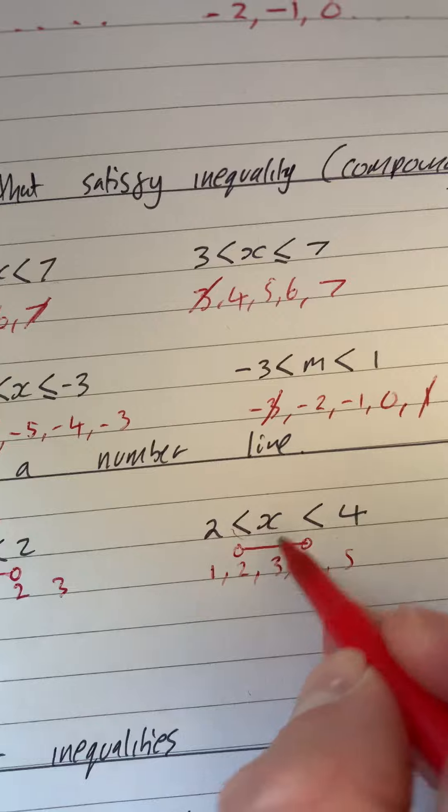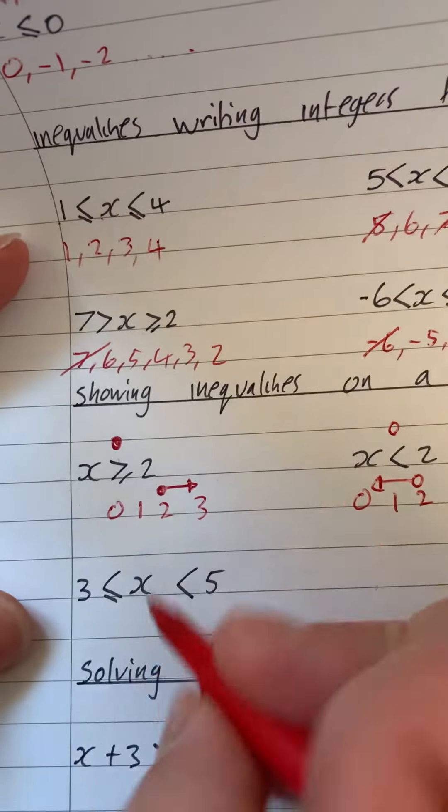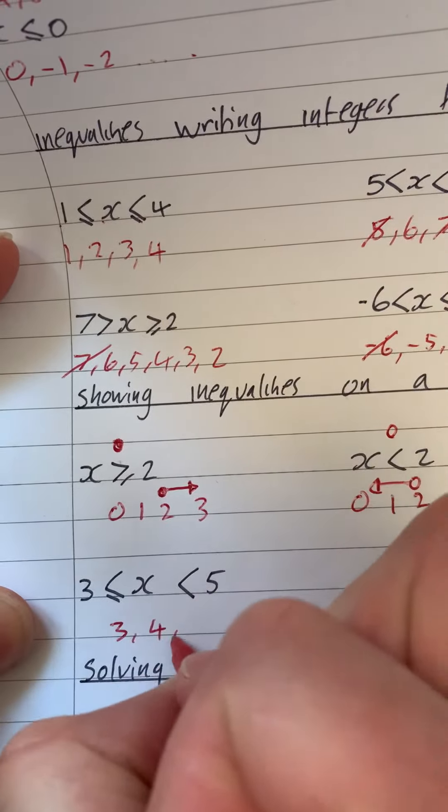So that represents all the numbers it can be, which is basically just three.